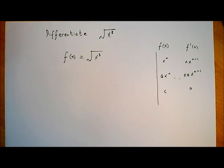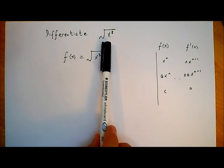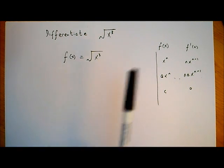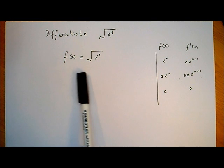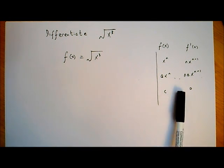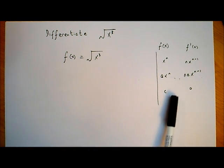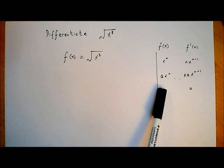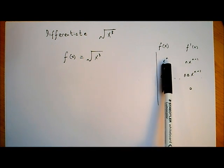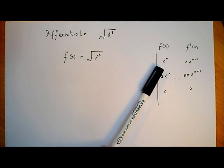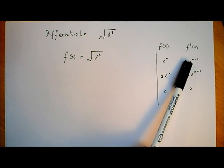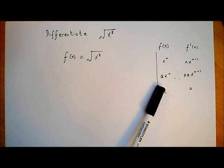Let's have a look at another example of differentiating a square root. We want to differentiate the square root of x cubed. So I'm going to start off by writing f of x is equal to the square root of x cubed. We have our rules for differentiating over here. When we differentiate x to the power of n, we get n times x to the power of n minus 1.